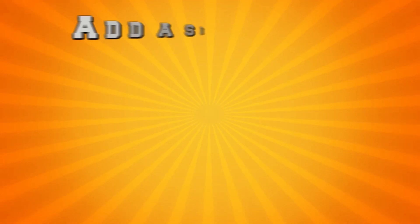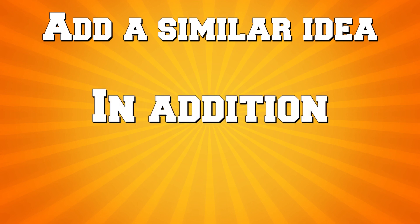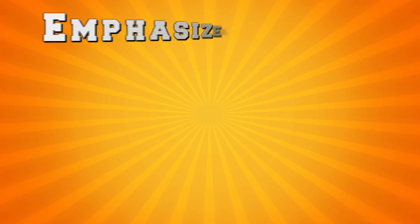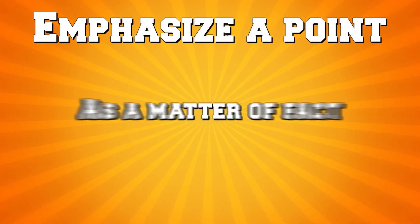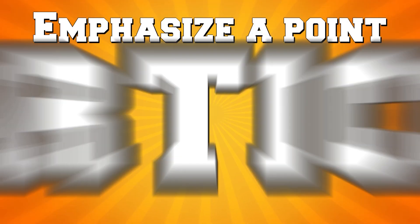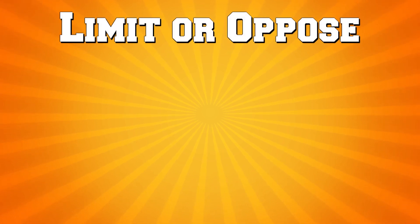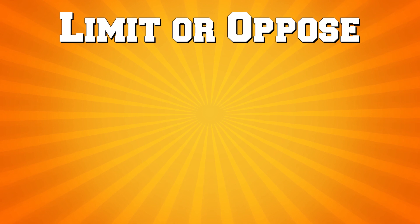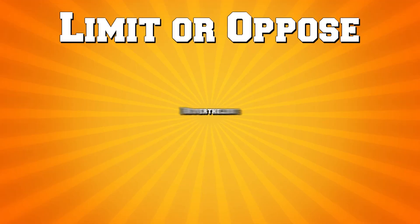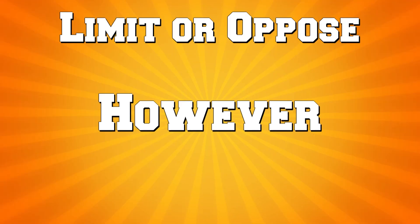What we see here is that, just like any other word, transitions have very specific meanings, and you can't just use them interchangeably. We have transitions that let us add a similar idea, like 'in addition,' 'moreover,' and 'likewise.' We have transitions that let us emphasize a strong point, like 'as a matter of fact,' 'in particular,' and 'indeed.' We have transitions that let us limit or oppose a previous statement, like 'although this may be true,' 'nevertheless,' 'on the other hand,' and 'however.'